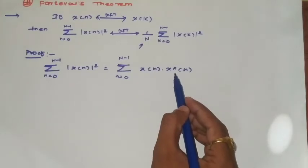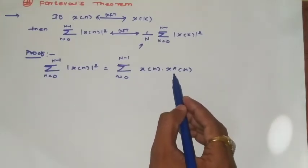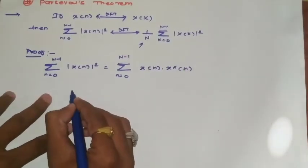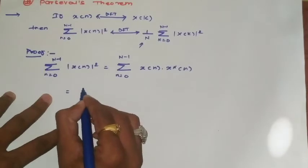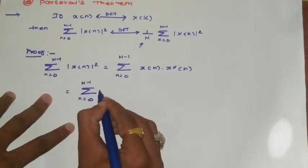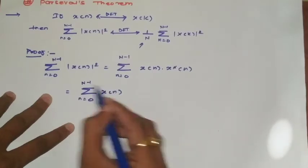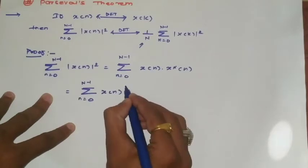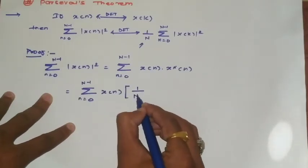We can write this term as: we keep the summation with x(n), and take the IDFT of x*(n). That formula gives us 1/N.